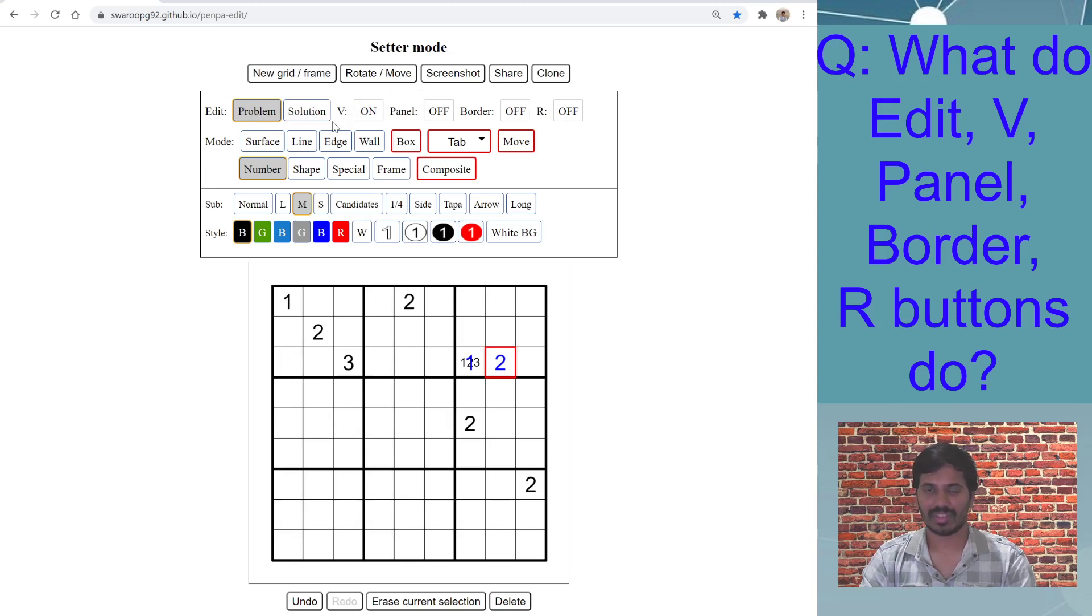And this is possible because we have these two layers, Problem and Solution. This is one usage. The other usage is called answer check. That is, you can provide the answer to Penpa so that when you share this puzzle with your other friends and when they solve it, Penpa does checking with respect to the answer you provided.